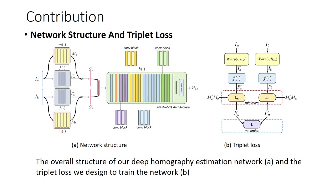Here is our network structure. Given two input gray images IA and IB, two modules extract the features and learn a mask from them, yielding feature maps FA and FB, as well as masks MA and MB. We multiply F and M to get GA and GB, then concatenate GA and GB and feed them into a homography estimator module using ResNet34 as the backbone. Finally we get eight numbers to compute a homography matrix HAB.